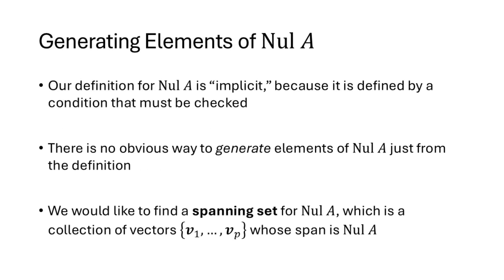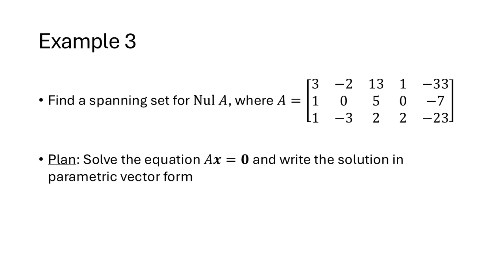One drawback with the implicit definition of null space is that there's no obvious way to generate elements of the null space just from that definition. What we'd like is a spanning set for the null space of A — a collection of vectors whose span is the null space of A. If you've forgotten what span means, you can go back to Lecture 8 to refresh your memory.